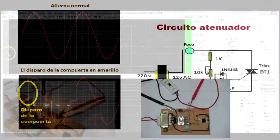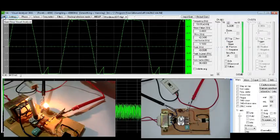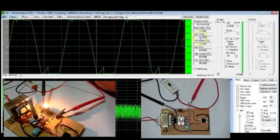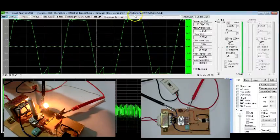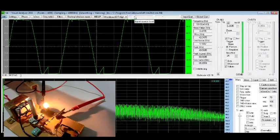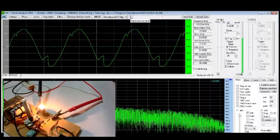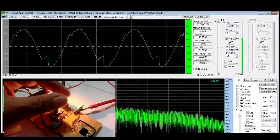To start, we are going to open Visual Analyzer and place the test probes between the two terminals of the bulb. There already appears the waveform. We are going to lower the gain a little because it is very wide and we can't see it completely. There we are, we already have the waveform.